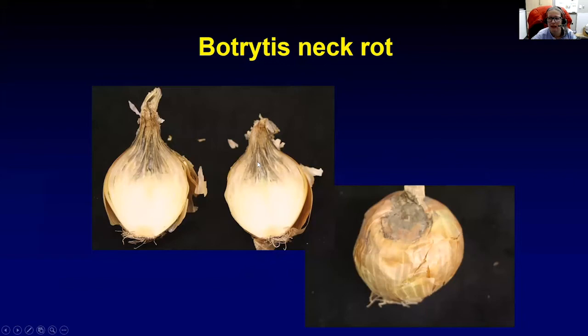Botrytis neck rot will always start in the neck and go from the top down, eventually infecting the entire bulb. Sometimes you can see masses of spores on the outside on the top of the bulb, but oftentimes you will only see symptoms once you actually cut the bulb open.